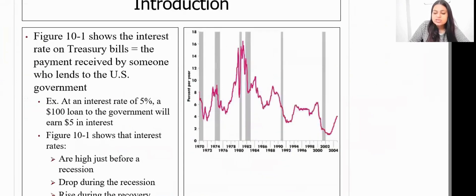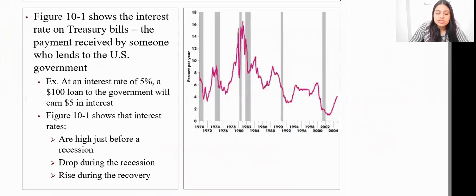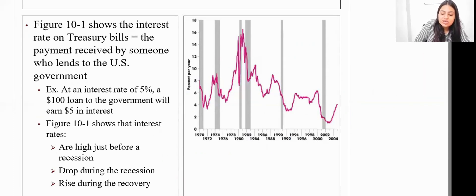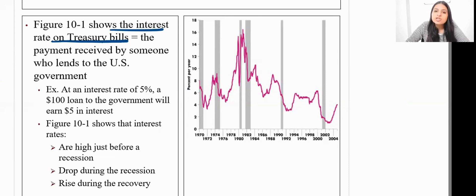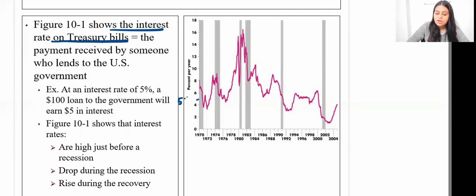Let's look at this diagram, which shows what was the interest rate on treasury bills. Treasury bills are usually issued by the government, and the aim is to raise funds directly from the public. The government issues treasury bills to the public and raises funds from them. What has been seen is that interest rates have varied significantly.